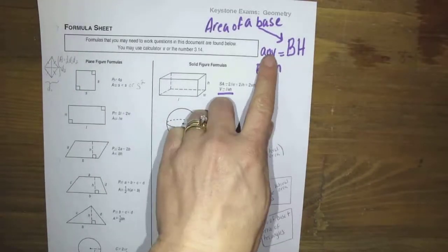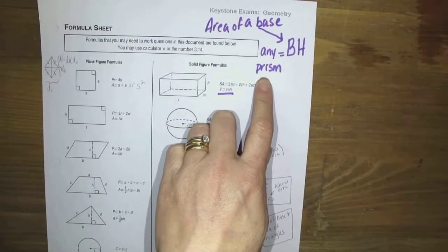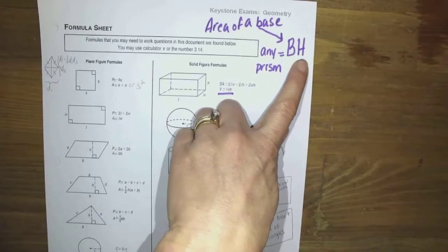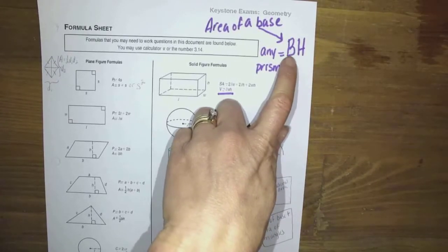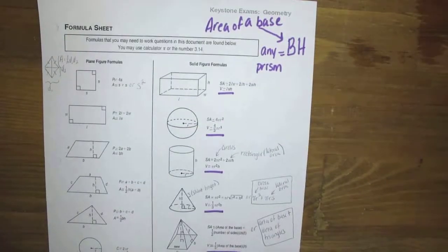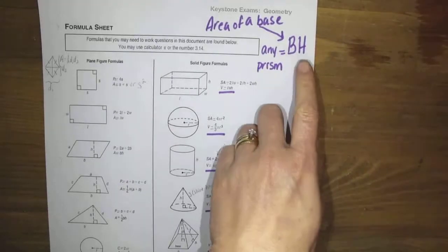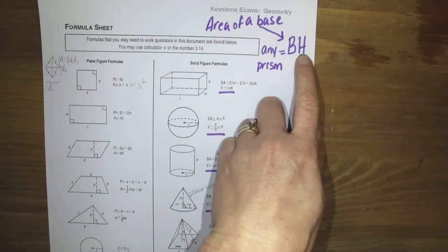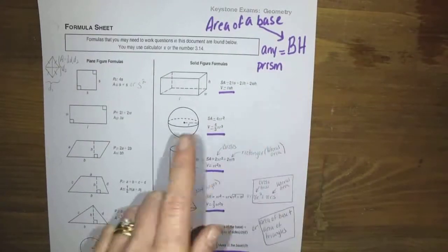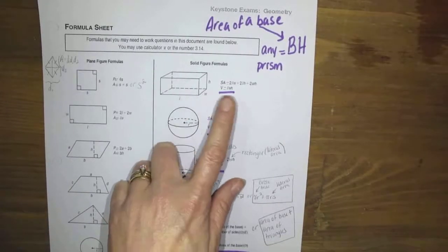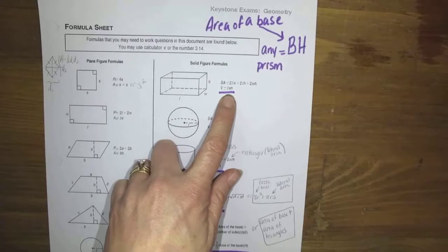If you have to find the volume of any prism, you may use the formula area of the base times the height. That's why I use capital B. So if you have a triangular prism in this one, make sure you find the area of the triangle first and then multiply it by the height of the prism. The height is how far apart the triangles are. All the other prisms that you use on this project are rectangular prisms, so you can use this formula right here.